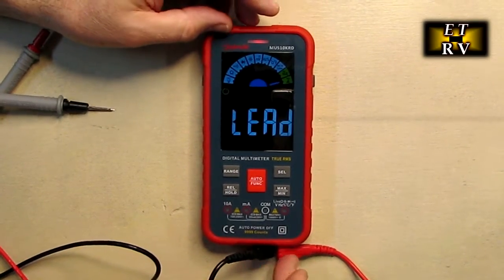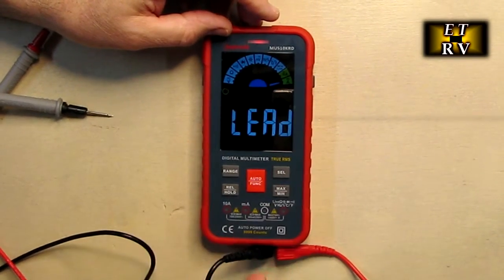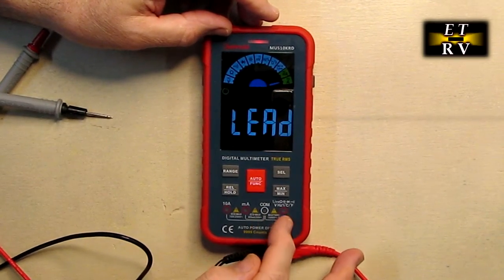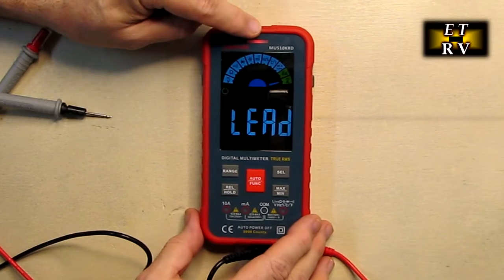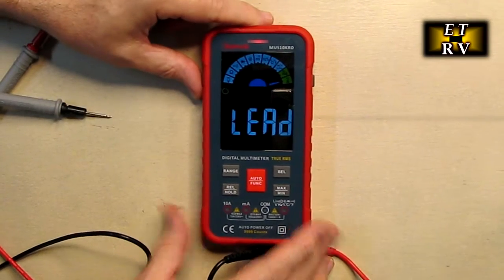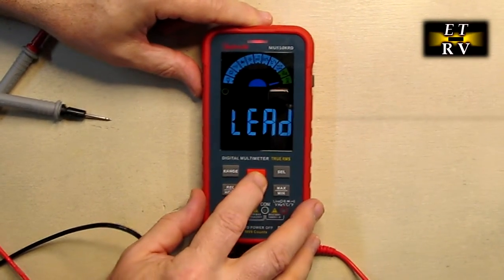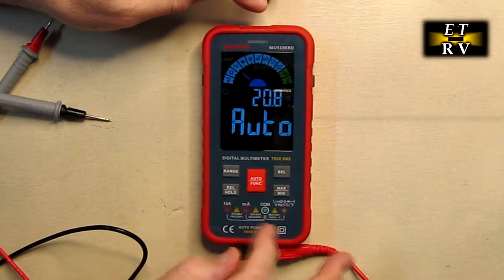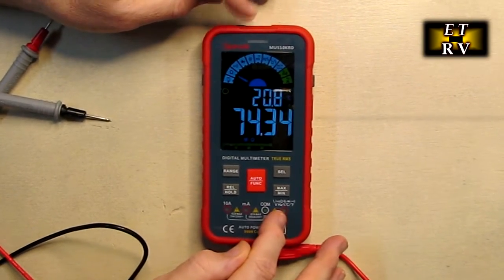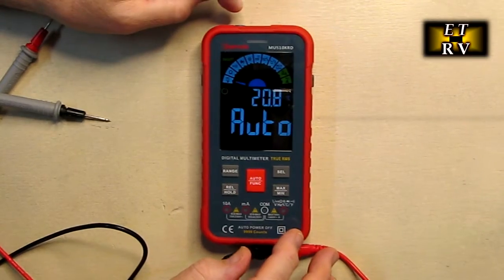If I have the leads in the wrong position, like I do—I'm on amps and I have it still in the common and the voltage—you notice the red lights up and it says 'lead,' letting me know that I'm in the wrong position. And then of course that goes away, that warning, because I was in the right position for the auto detect functions on there.